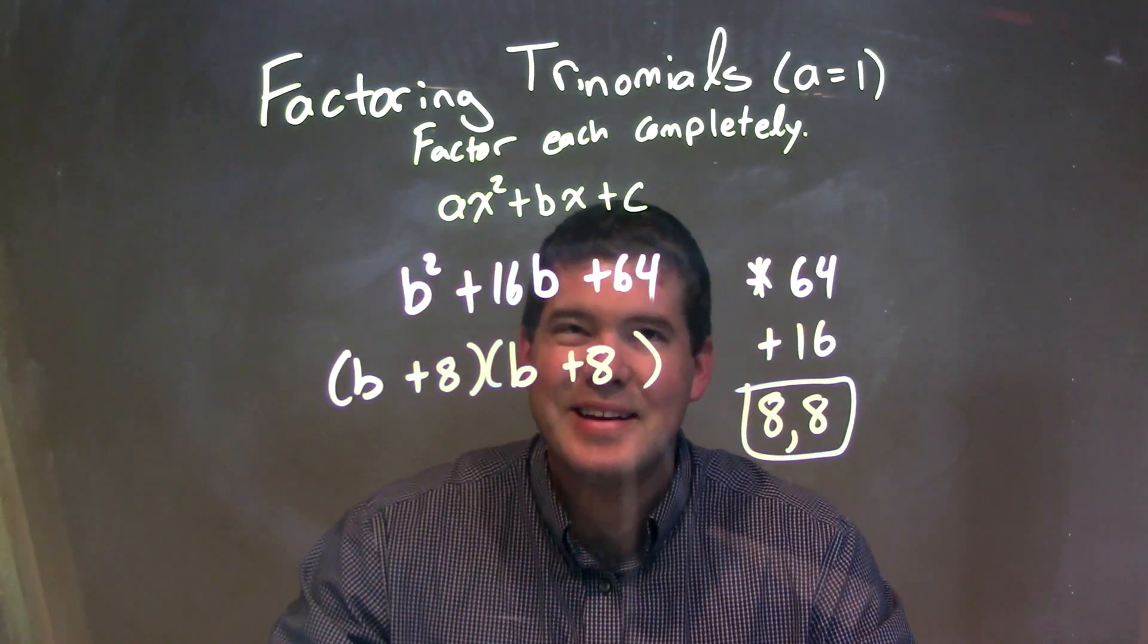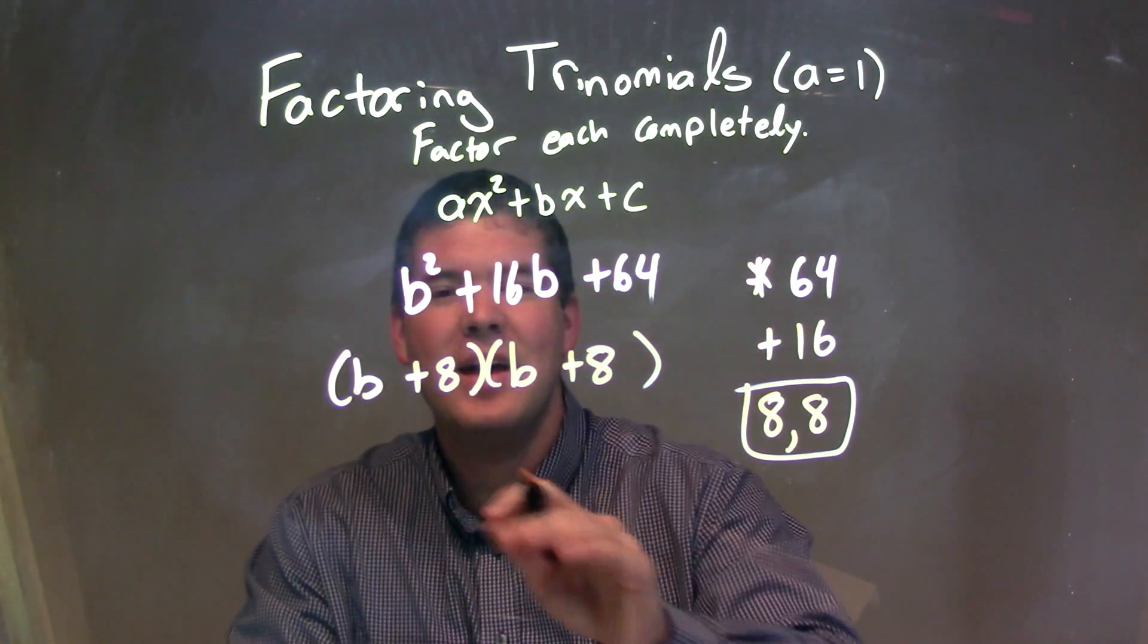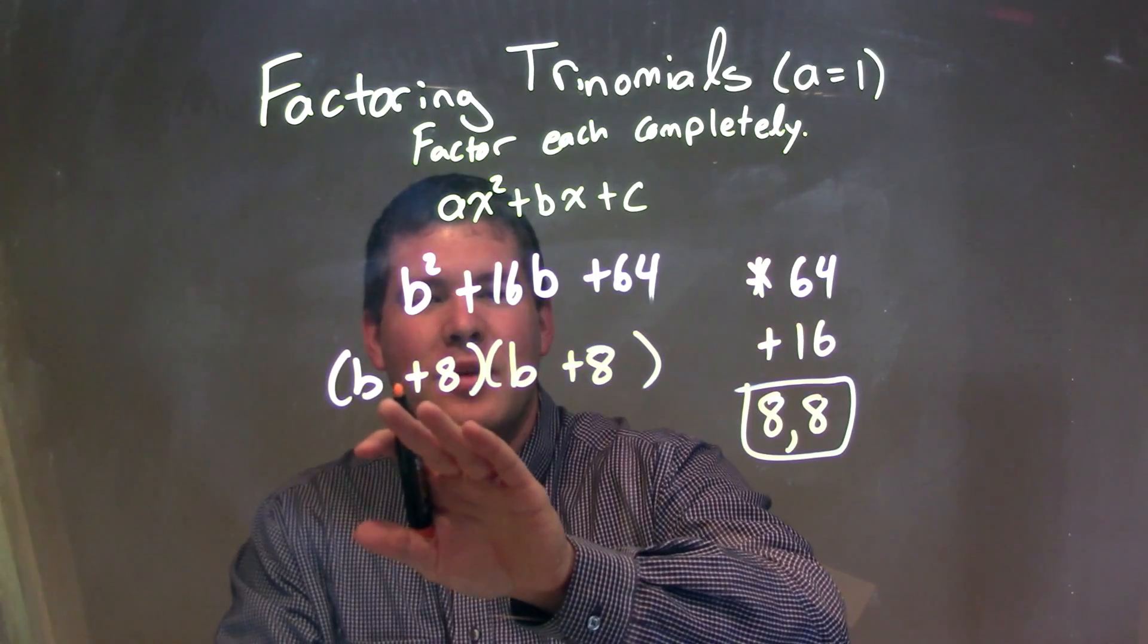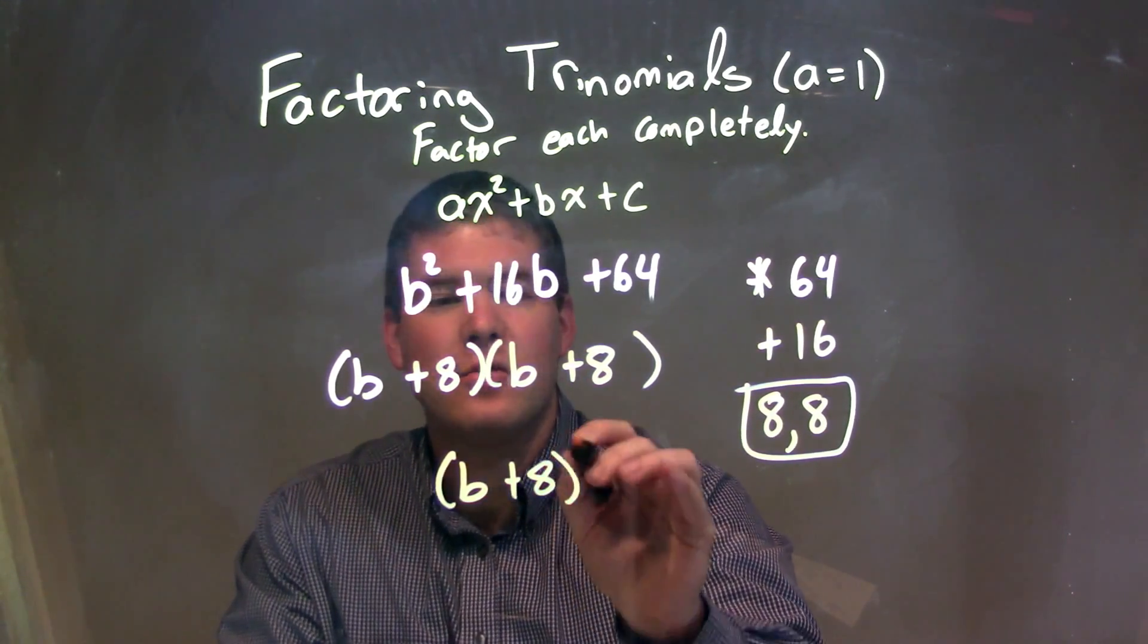But I can write this even in a simpler form. Because I have the same thing written twice, b plus 8 times b plus 8, so I'll write this as b plus 8 squared.